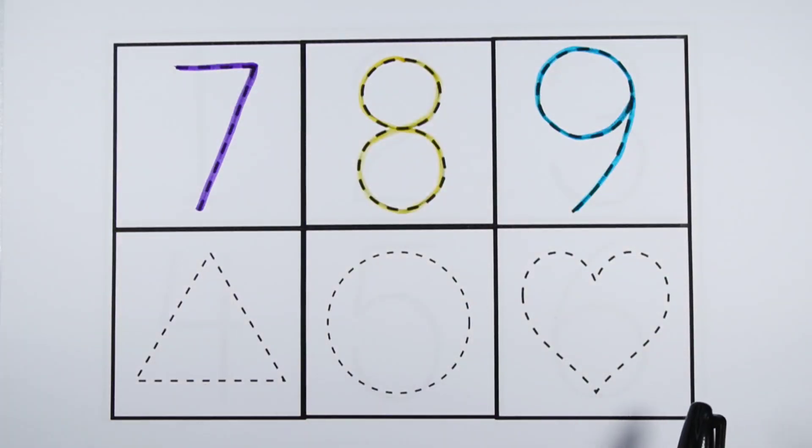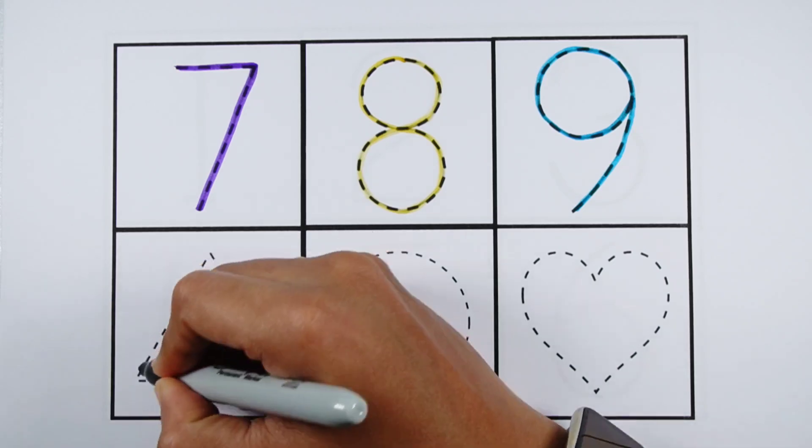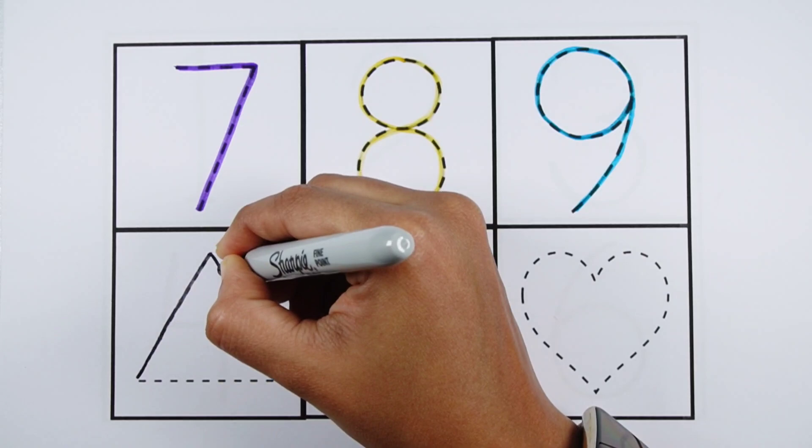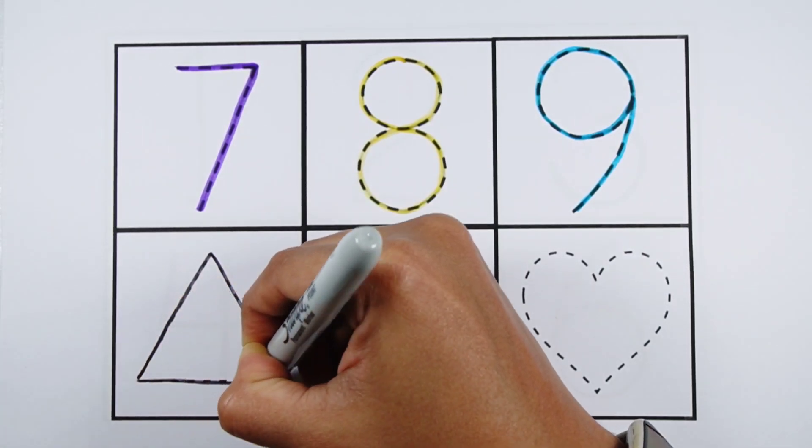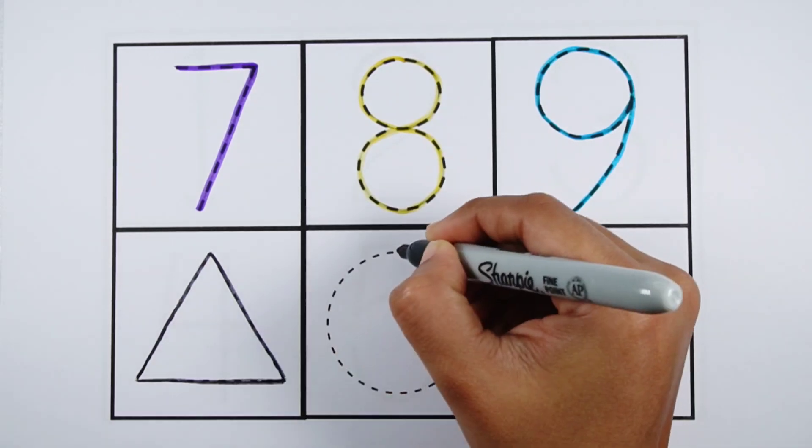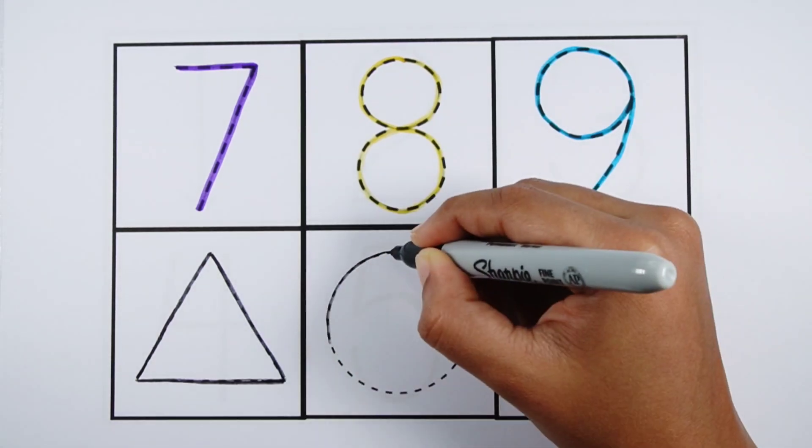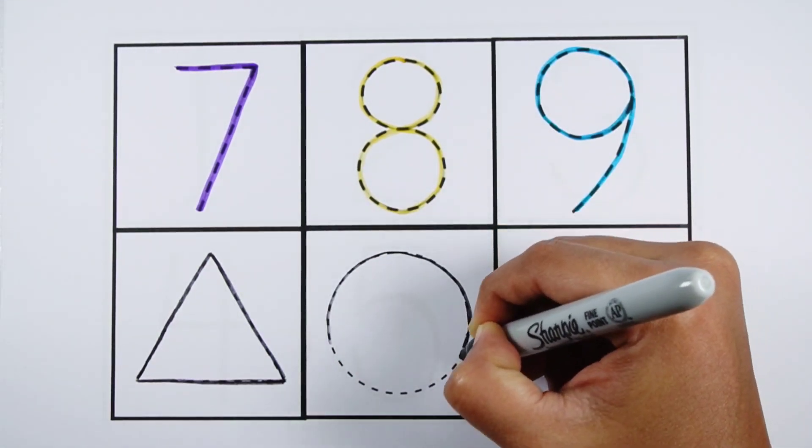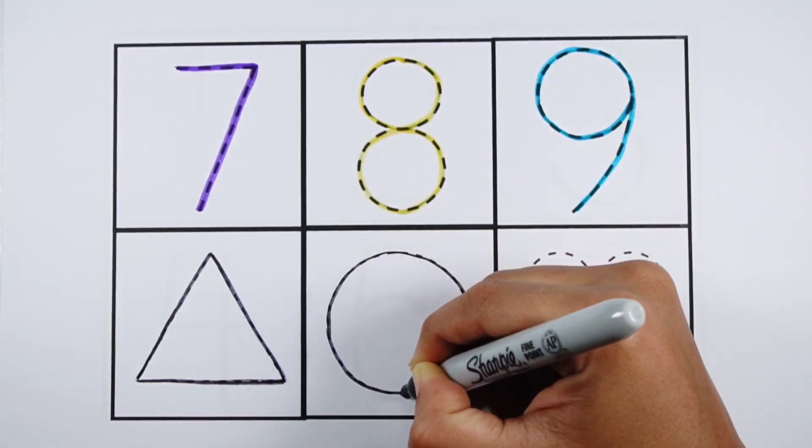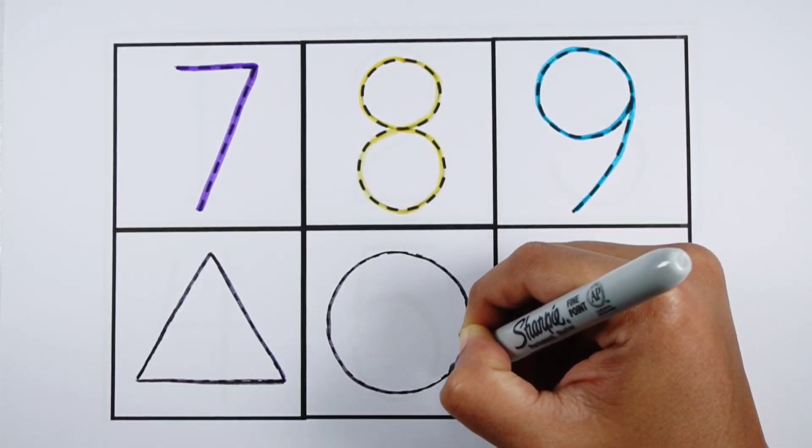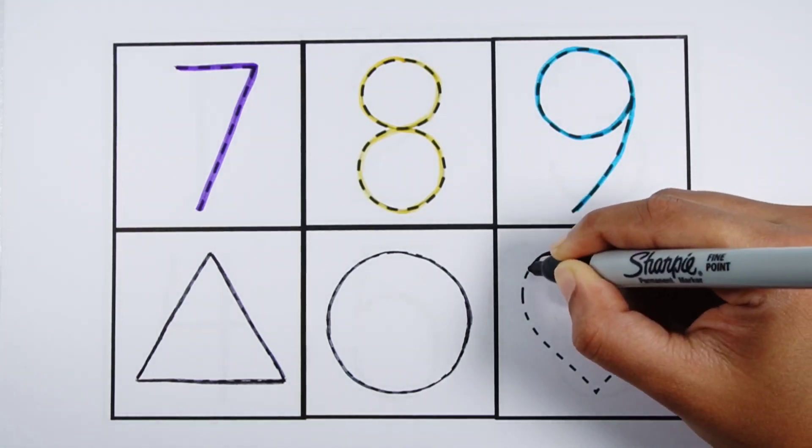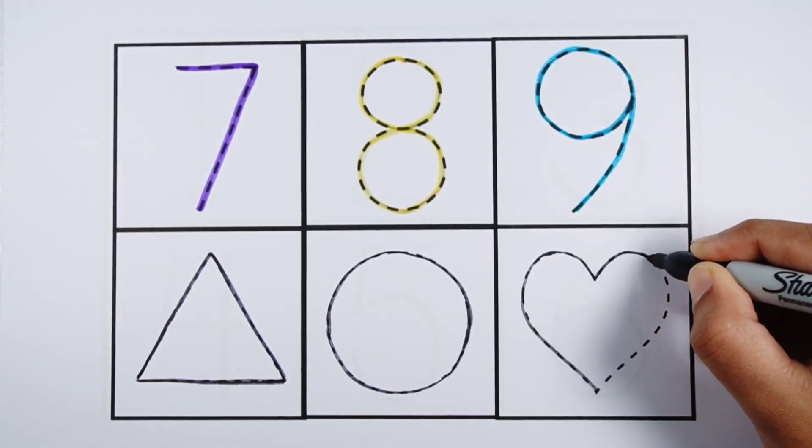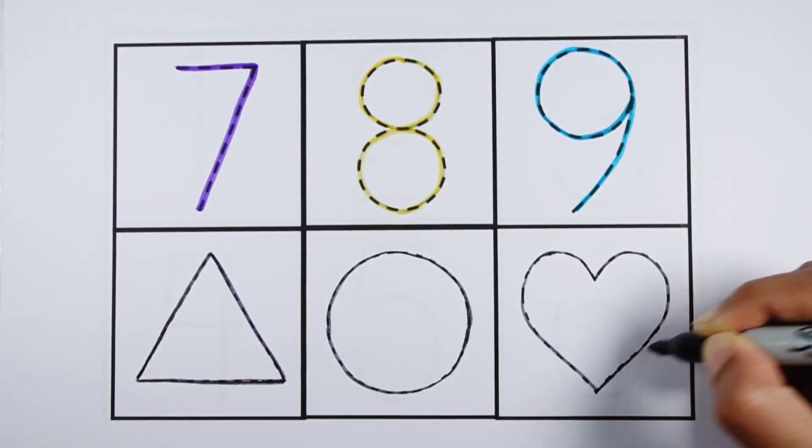Now let's trace the shapes. Triangle, circle, heart. Triangle. Circle, heart.